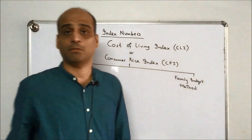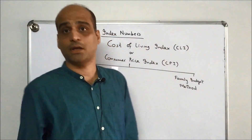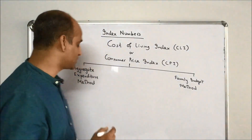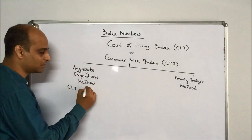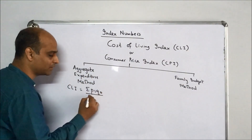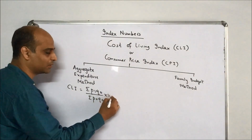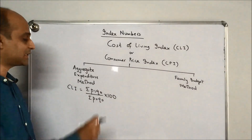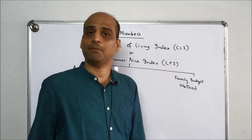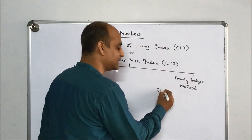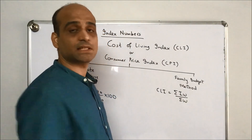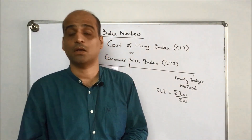You don't have to memorize any new formulae — we'll be using two formulae which we've already studied earlier. For the Aggregate Expenditure Method, the formula is the same as the Laspeyres Price Index: CLI = summation(p1·q0) / summation(p0·q0) × 100. In the Family Budget Method, we use CLI = summation(I·W) / summation(W).